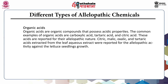The second class is organic acids — compounds that possess acidic properties. Common examples include carboxylic acid, tartaric acid and citric acid. These acids are reported for their allelopathic nature. Citric, malic, oxalic and tartaric acids have been extracted from leaf aqueous extracts and were reported for allelopathic activity against lettuce seedling growth.